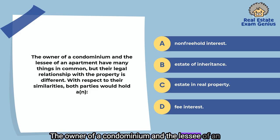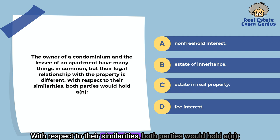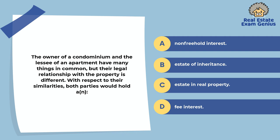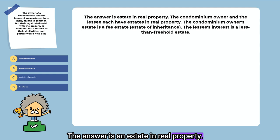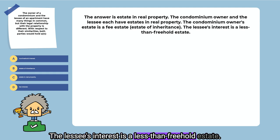The owner of a condominium and the lessee of an apartment have many things in common, but their legal relationship with the property is different. With respect to their similarities, both parties would hold: a non-freehold interest, an estate of inheritance, an estate in real property, or a fee interest. The answer is an estate in real property. The condominium owner and the lessee each have estates in real property. The condominium owner's estate is a fee estate, while the lessee's interest is a less than freehold estate.